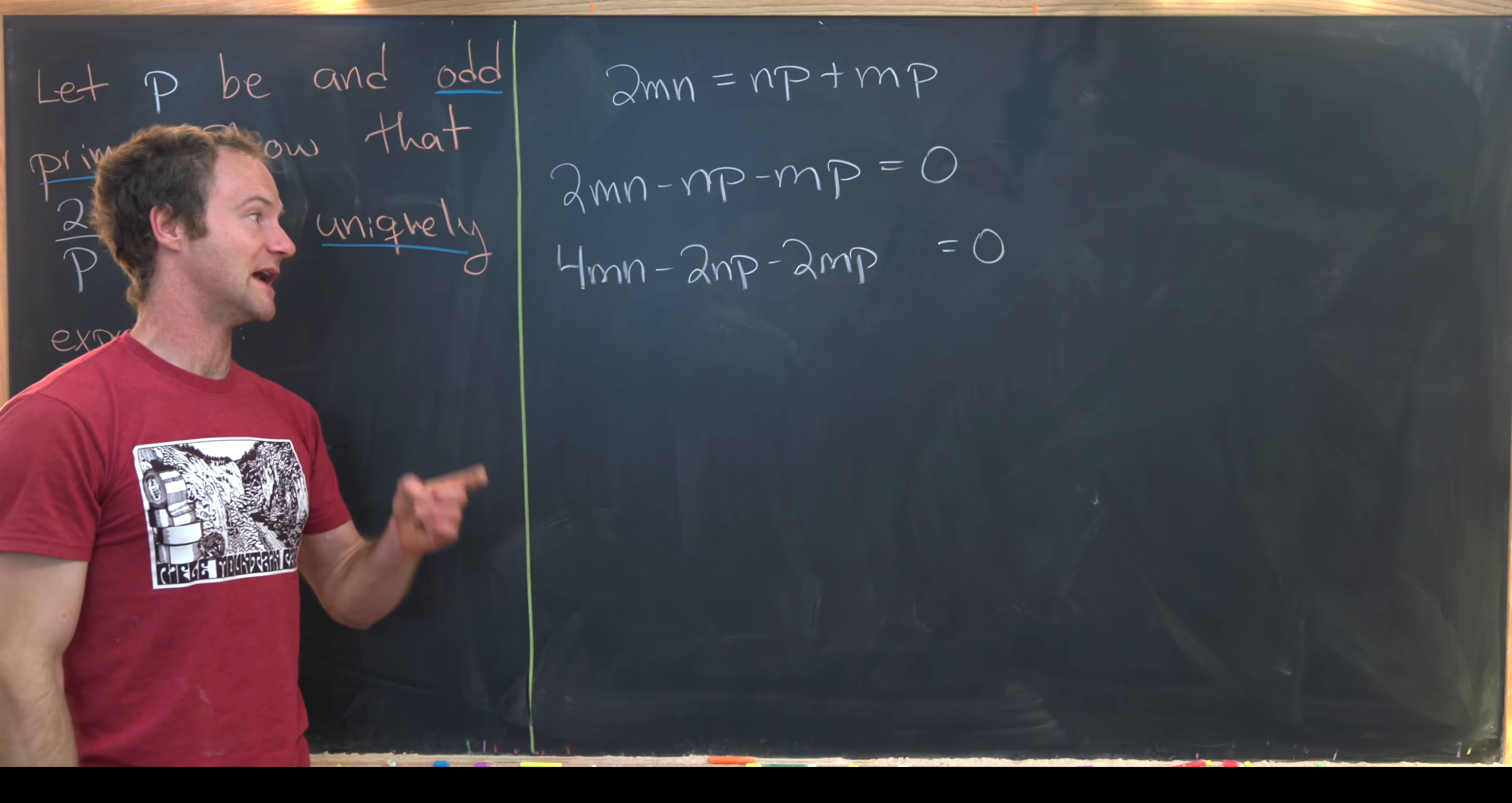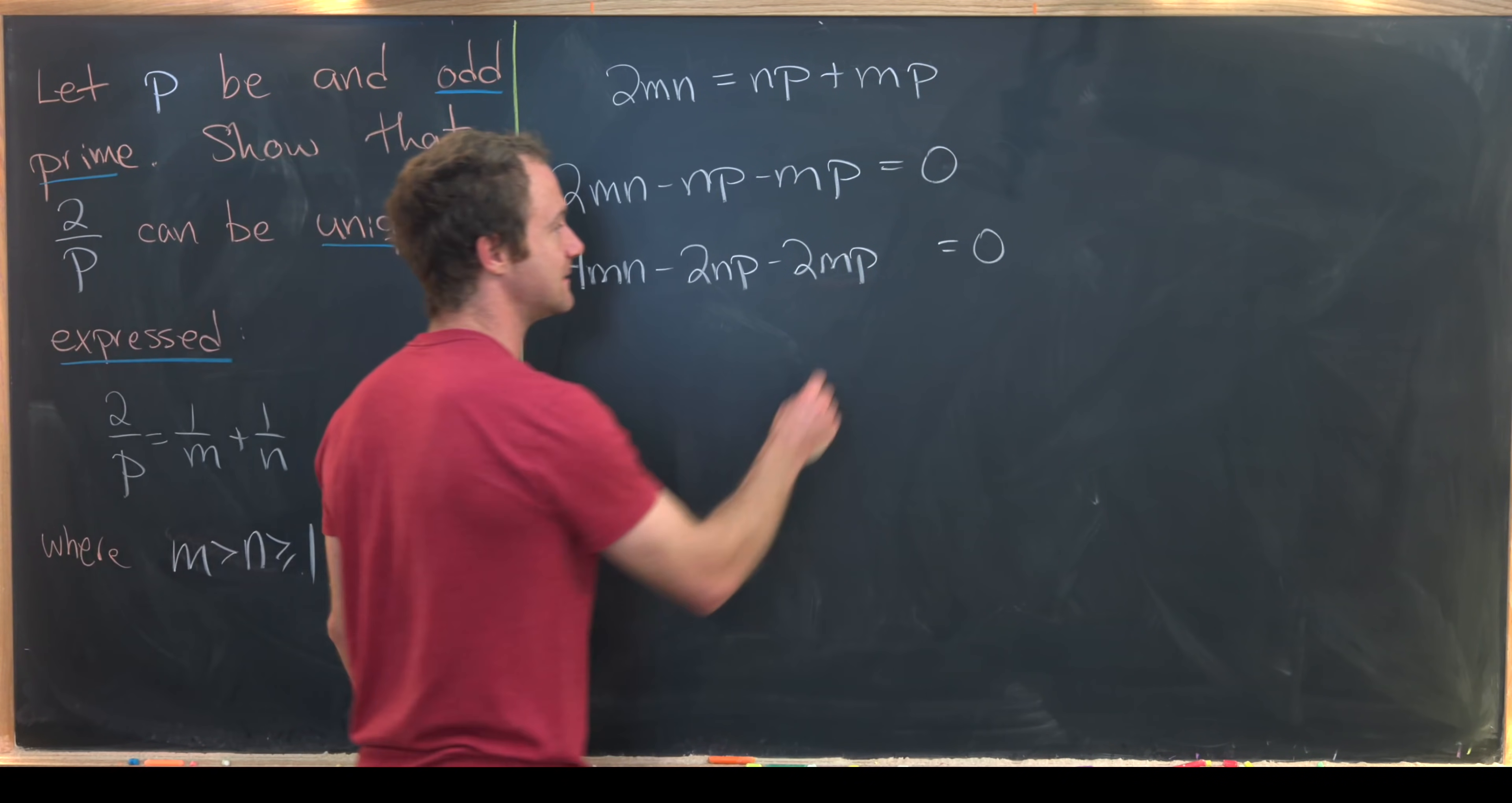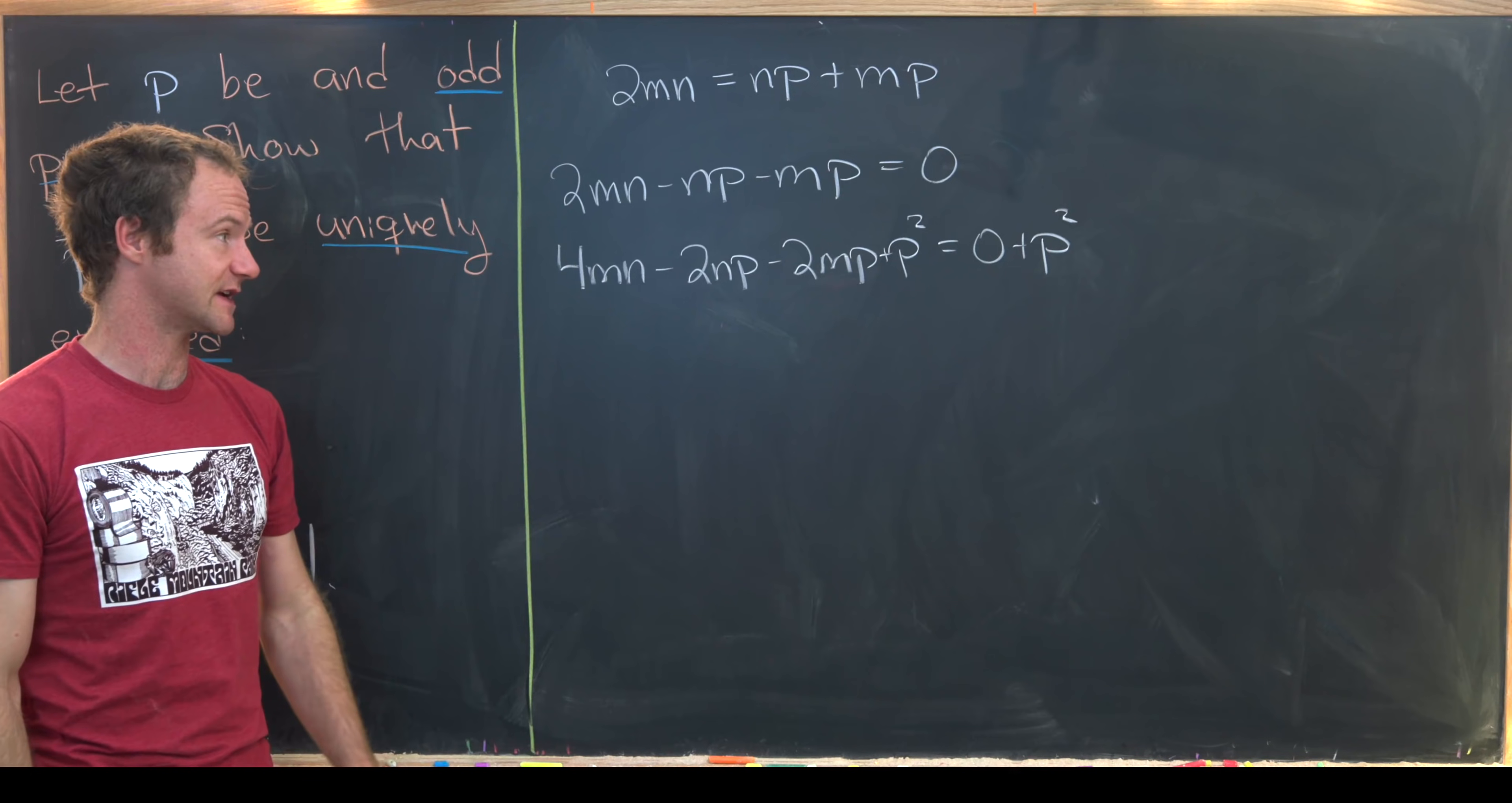Now my next goal is to add something to both sides of this equation that complete that product. And you can see that if we add P squared to both sides of that equation then we do complete the product in the left hand side.